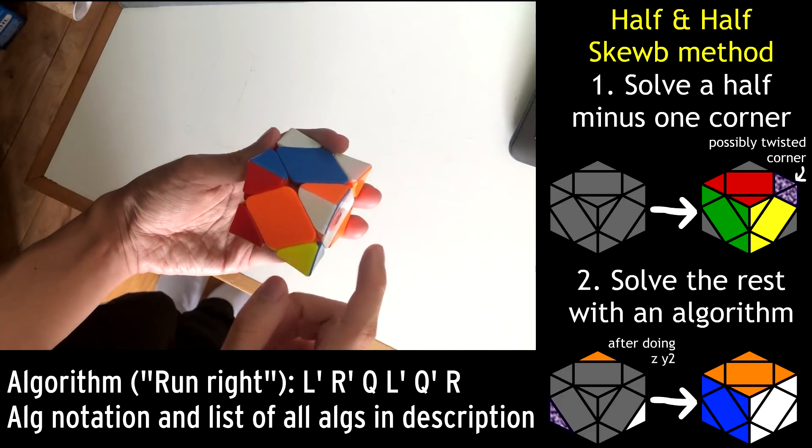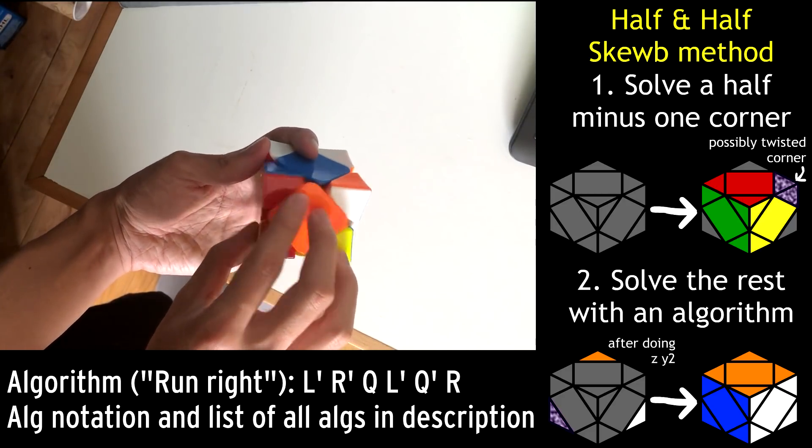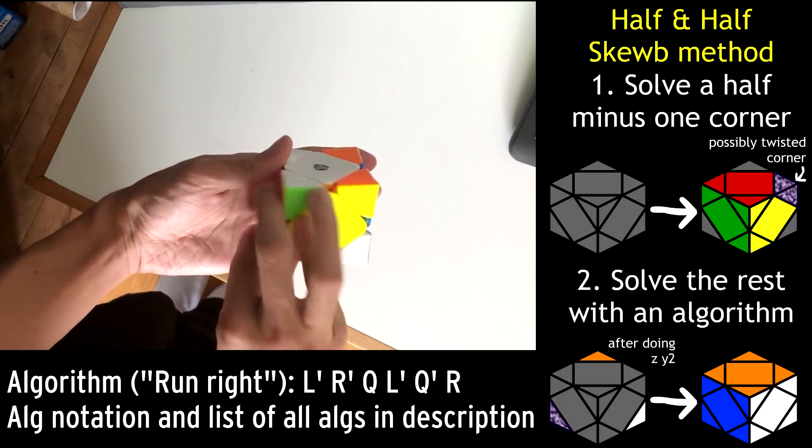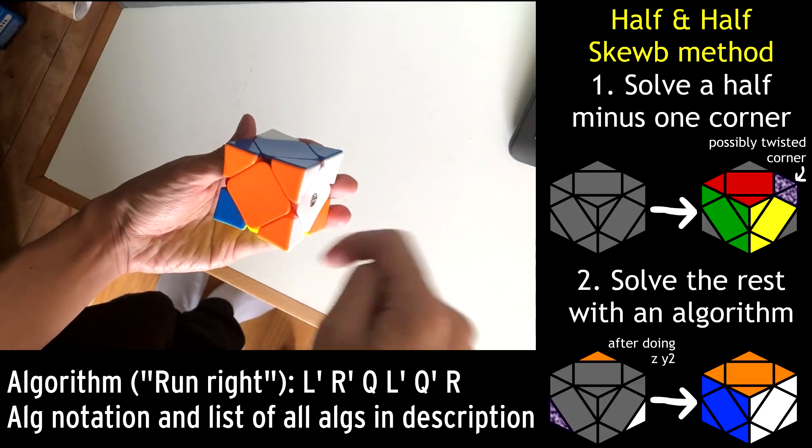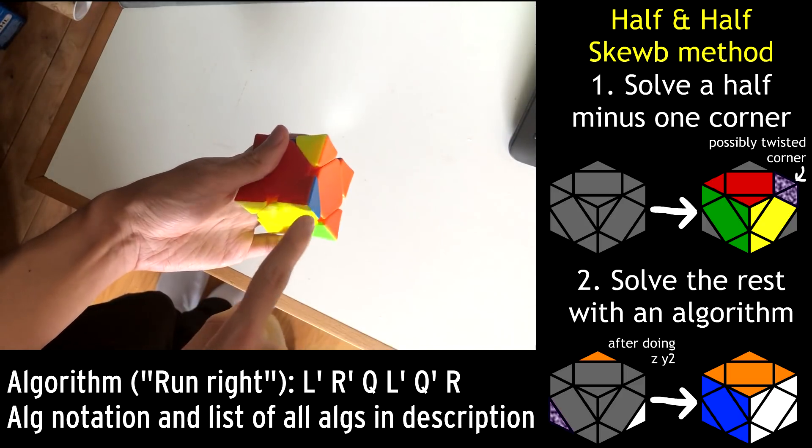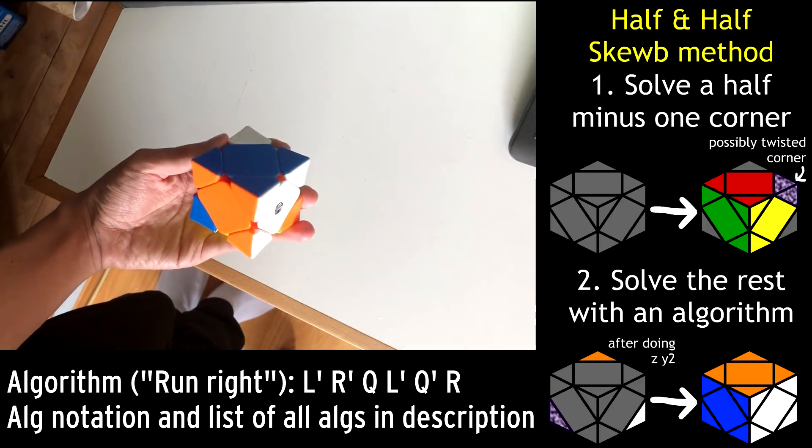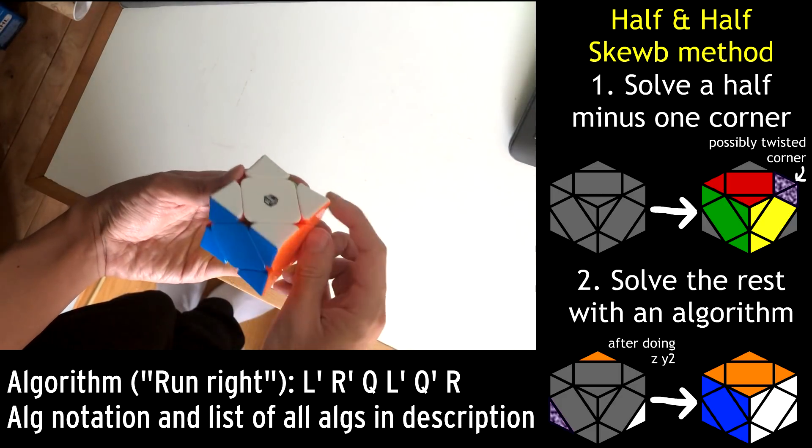the algorithm is only six moves. And these are those six moves. And that will solve the second half and twist the corner correctly, and now it's just an AUF away from being solved.